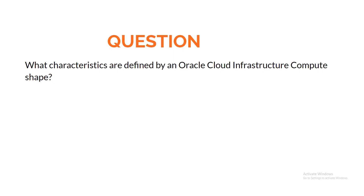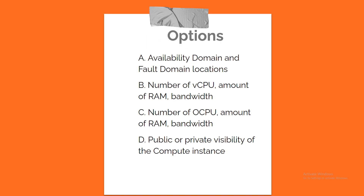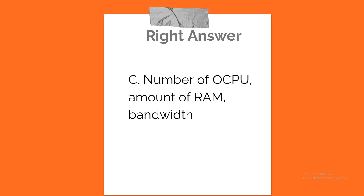Question. What characteristics are defined by an Oracle Cloud Infrastructure Compute Shape? A. Availability Domain and Fault Domain Locations. B. Number of VCPU, amount of RAM, bandwidth. C. Number of OCPU, amount of RAM, bandwidth. D. Public or private visibility of the Compute Instance. Correct answer: C. Number of OCPU, amount of RAM, bandwidth.